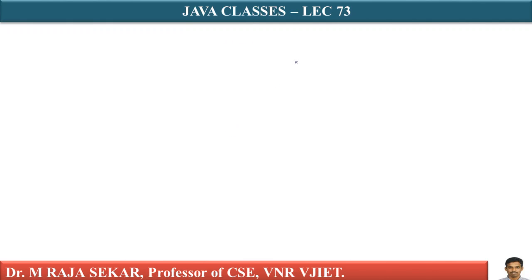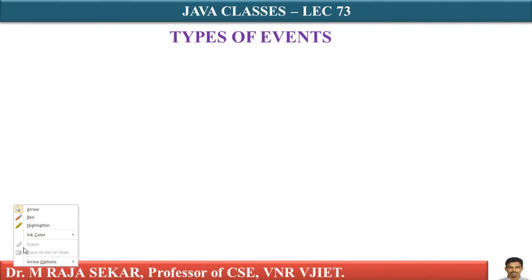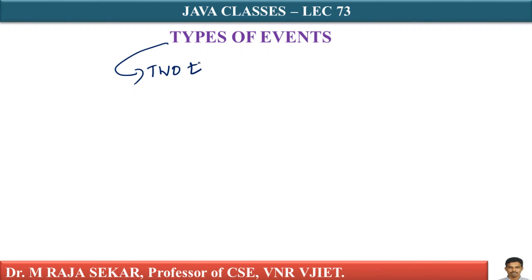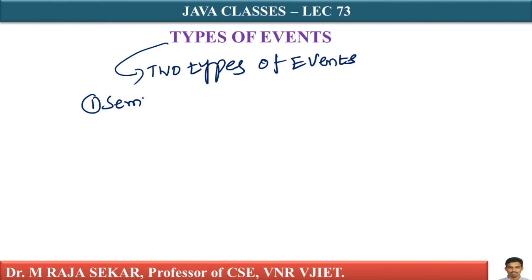In this lecture we will try to understand types of events in Java programming language. There are two types of events. The first one is semantic events, and the second category is low level events.